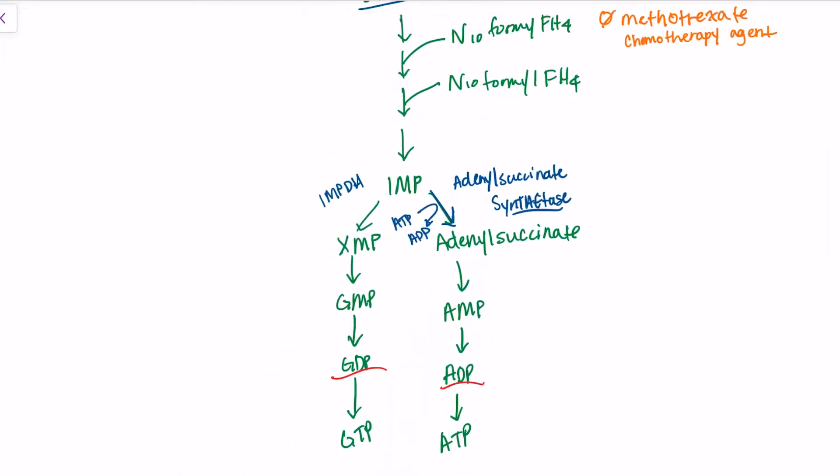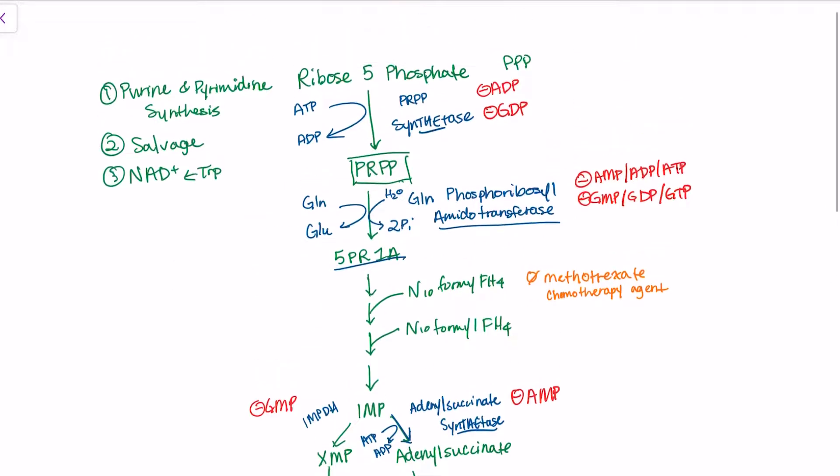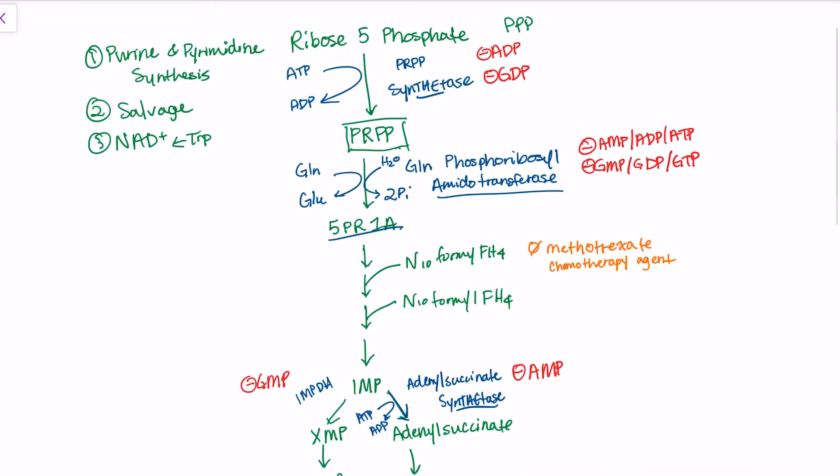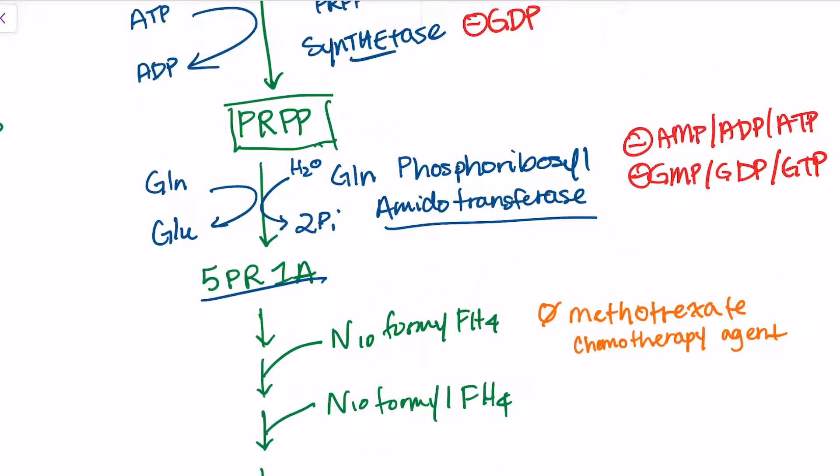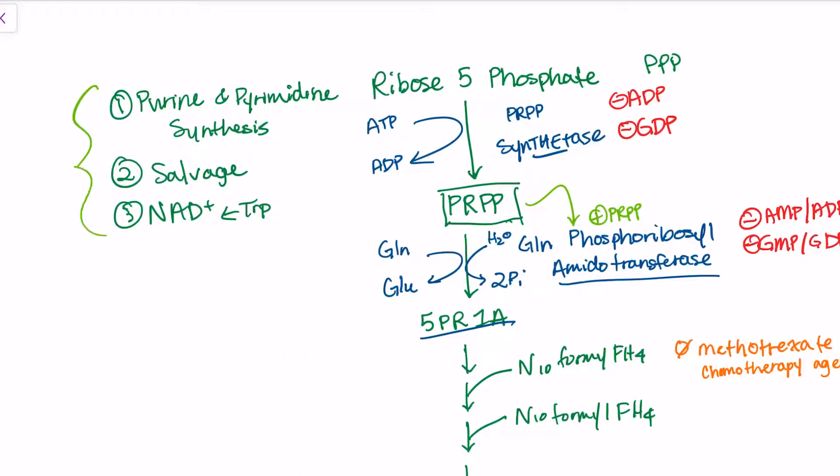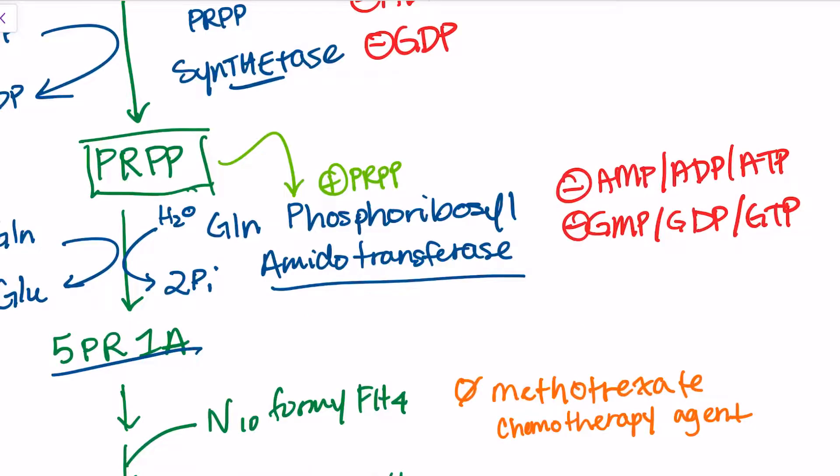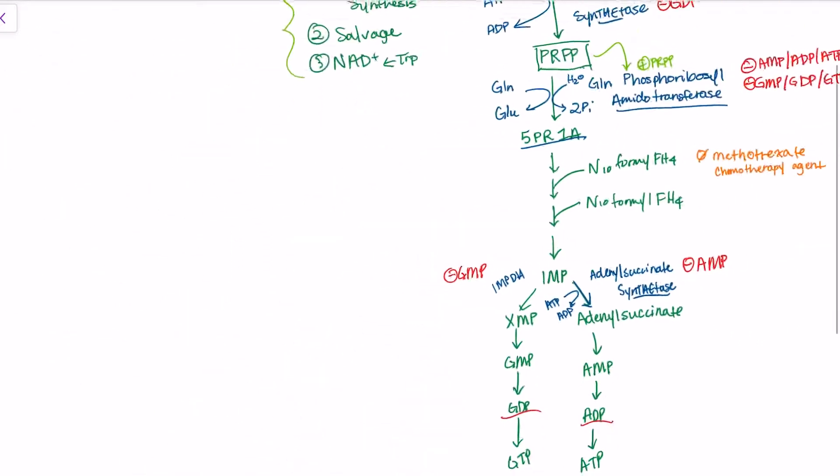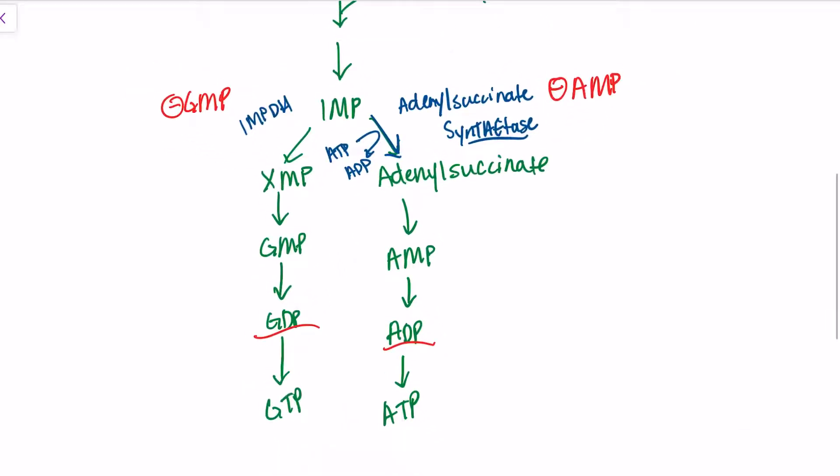Additionally, these enzymes down here are inhibited by AMP and GMP respectively. The only other allosteric regulation is the positive allosteric regulation of PRPP on glutamine-phosphoribosyl-amidotransferase. So PRPP will positively regulate phosphoribosyl-amidotransferase. In addition to all of PRPP's roles, we have the role of allosteric activation. This is our biosynthesis.